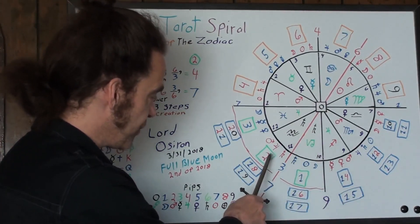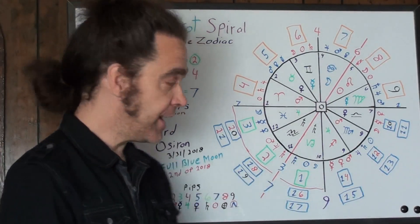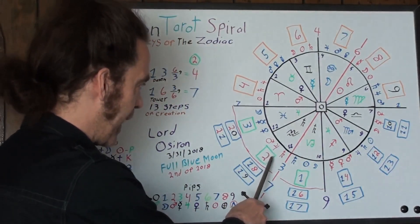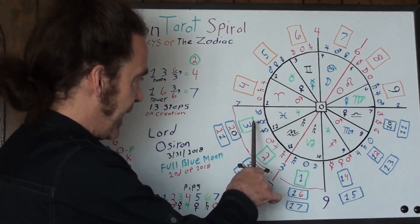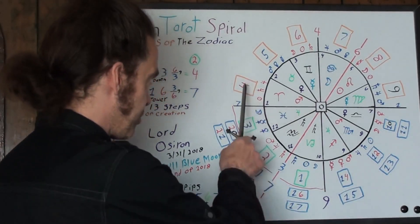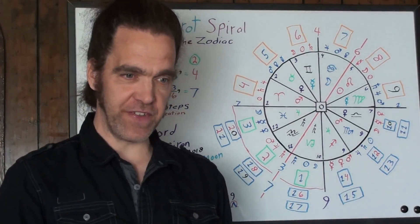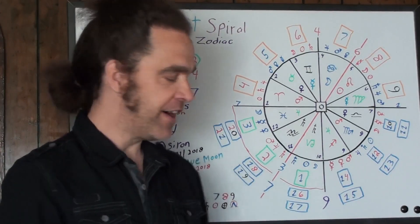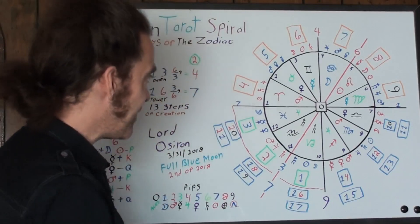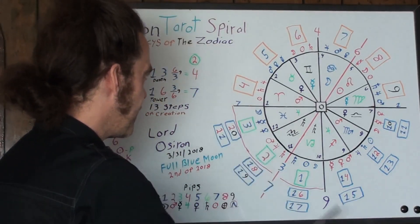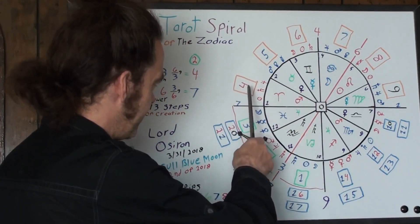Card number two is the magician, the masculine aspect of creation — electricity, duality, the action aspect. Card number three is the empress, and what the empress does is give birth to the emperor. They're not husband and wife; the empress is the mother of her child, which is the emperor. That takes us to the birth of the year at the equinox, and the first card above the abyss is the emperor.